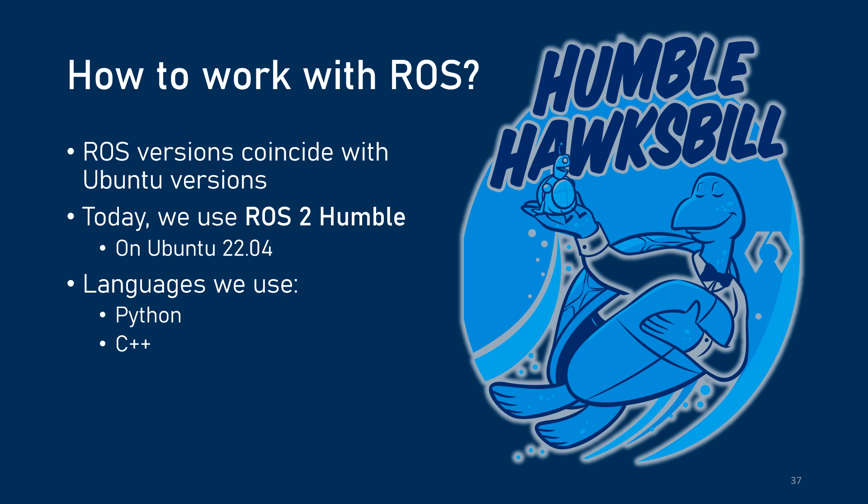In our group, we use ROS2 Humble on Ubuntu 22 as of today, though this probably will not be best for you depending on when you're watching this video. The major languages supported in the ROS framework are Python and C++, but with such a large community, people have created bindings for Java as well as Rust, and there will likely be more programming languages.